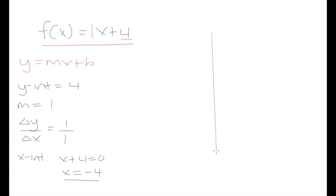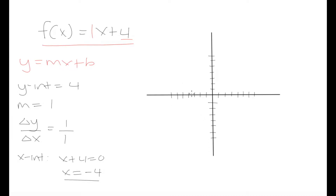Let's put a Cartesian plane here. Each of the notches on the axes represents a unit of 1, going from negative 7 to positive 7 on both the x and y axes.